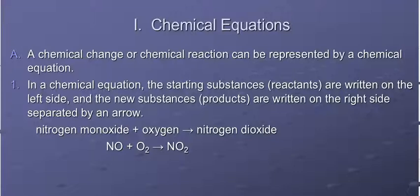A chemical reaction can be represented by a chemical equation. In a chemical equation, the starting substances, the reactants, are written on the left side of the arrow, and the new substances, your products, are written on the right side of the arrow.